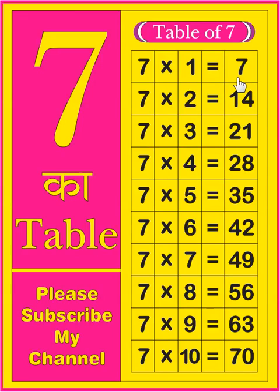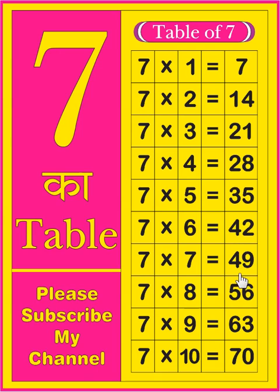So let's start. 7 × 1 = 7, 7 × 2 = 14, 7 × 3 = 21, 7 × 4 = 28, 7 × 5 = 35, 7 × 6 = 42, 7 × 7 = 49, 7 × 8 = 56, 7 × 9 = 63, 7 × 10 = 70.